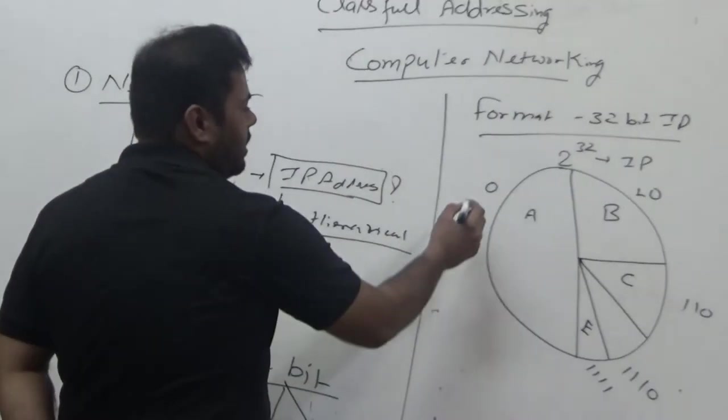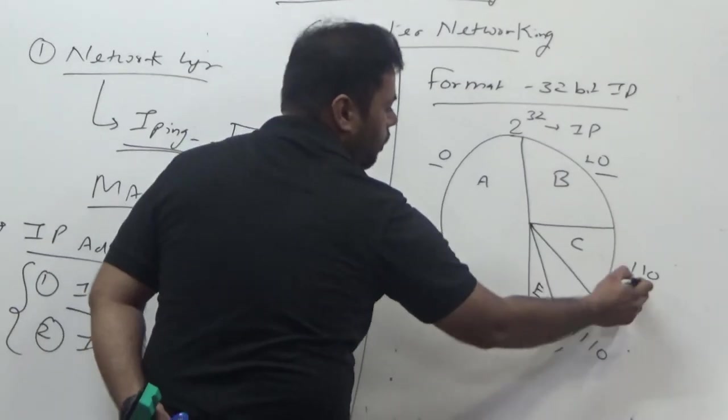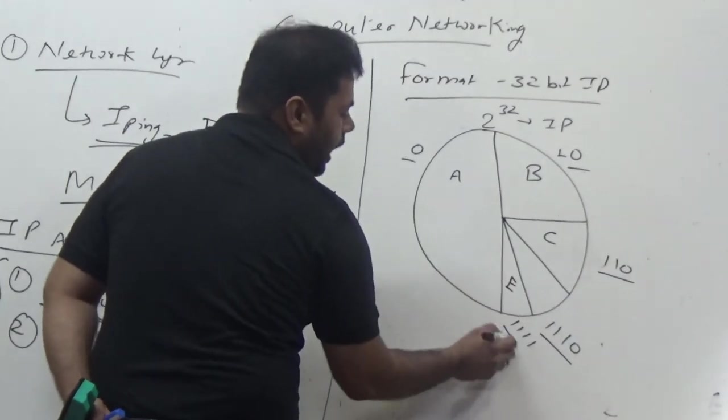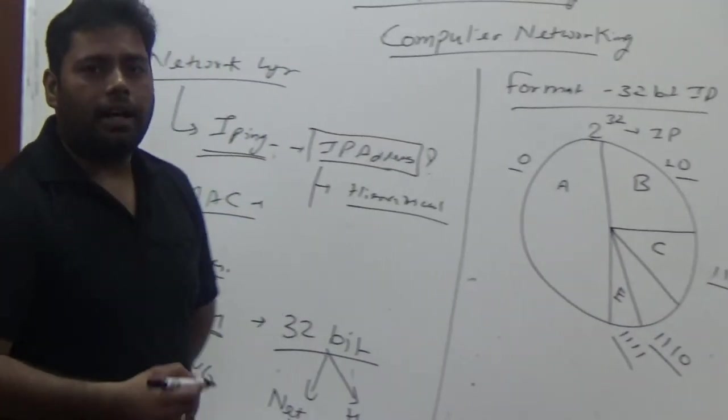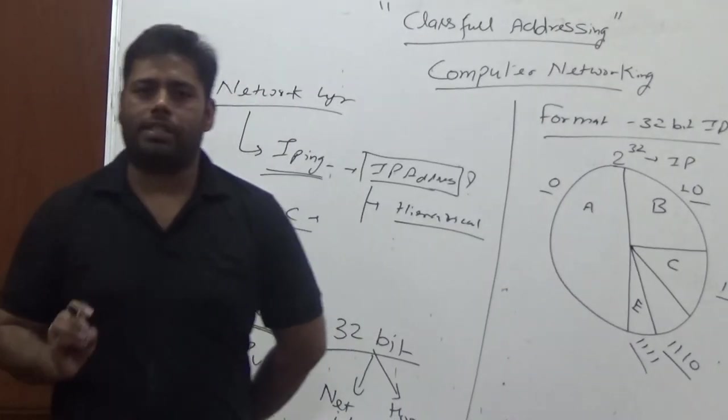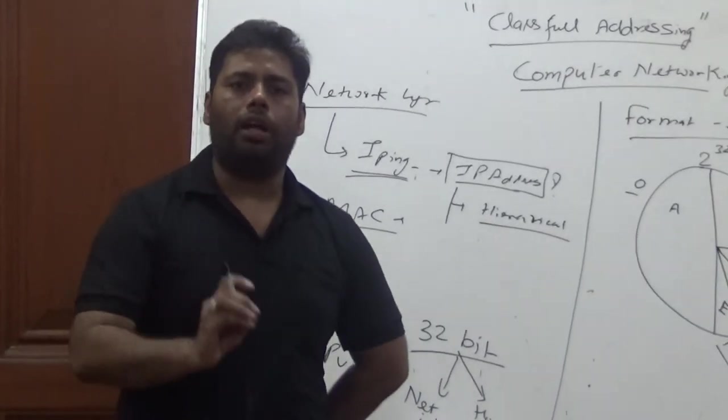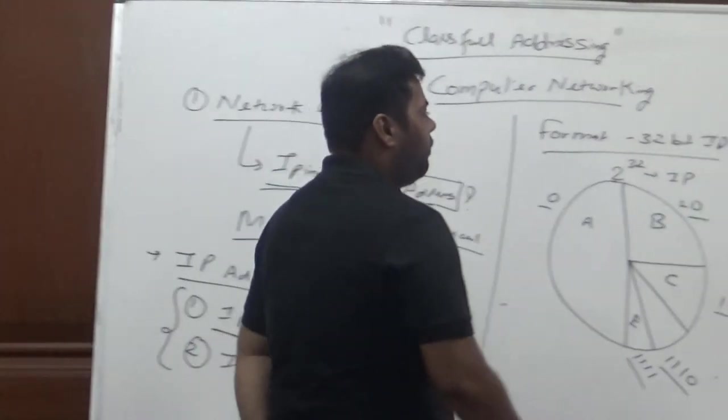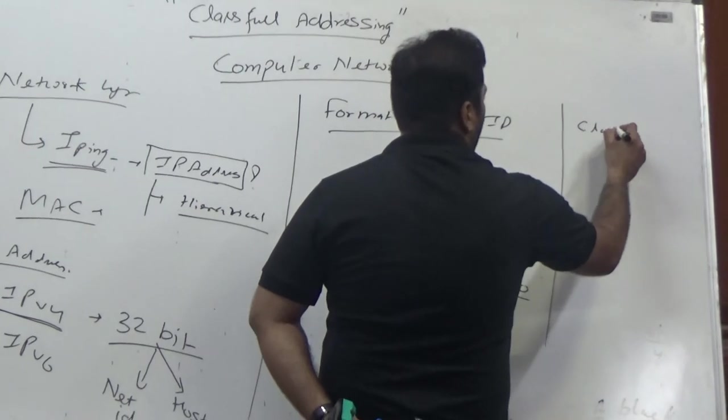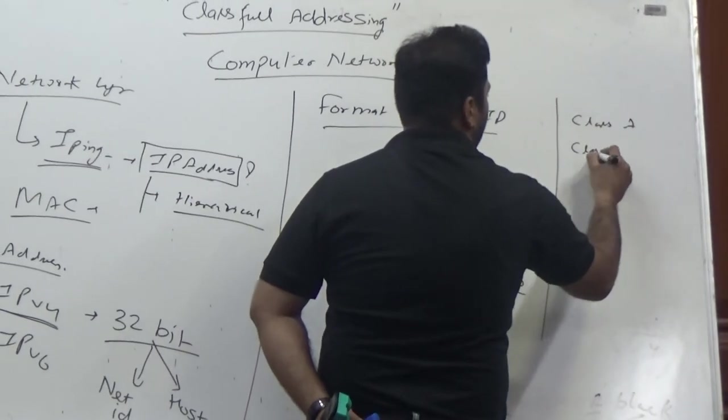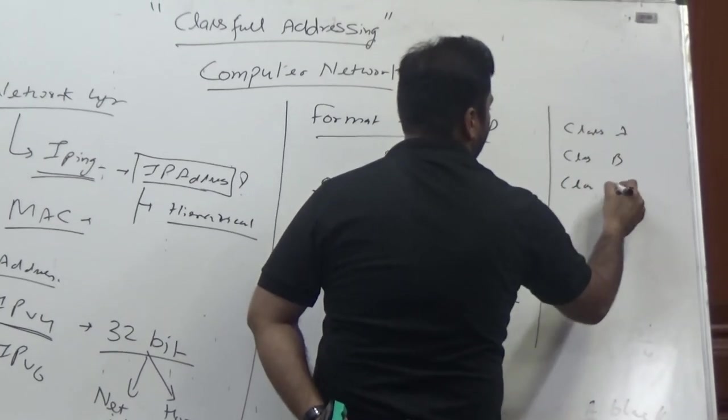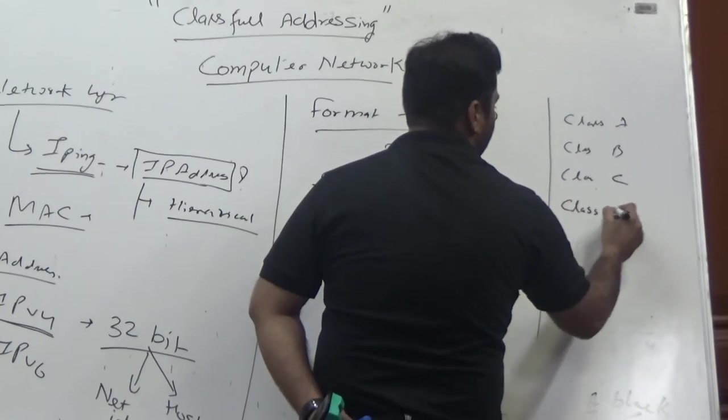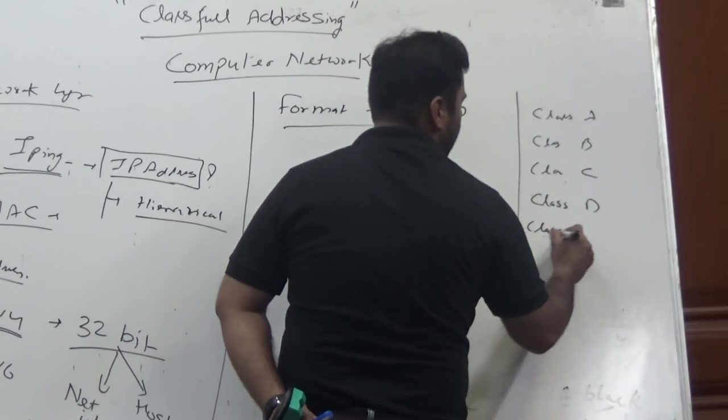These part addresses—0, 10, 110, 1110, and 1111—are those bits which can identify or name a class. So now we have five classes: Class A, Class B, Class C, Class D, and Class E.